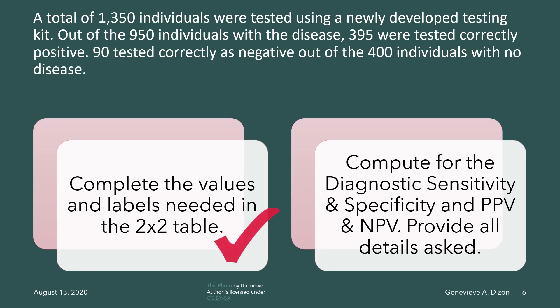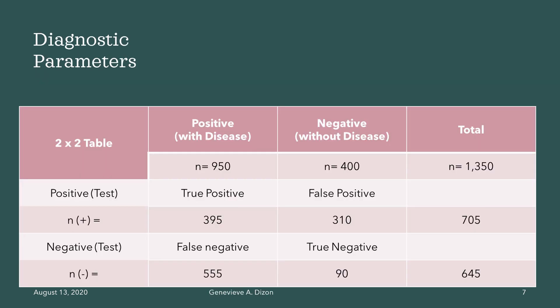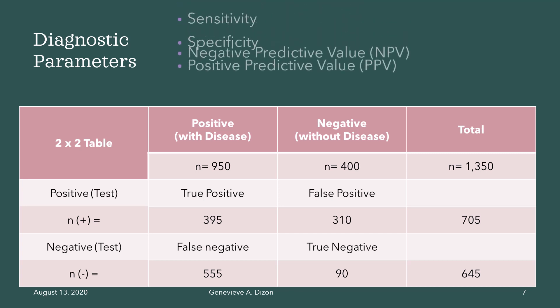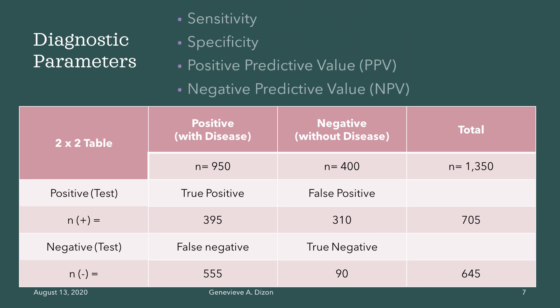We now have all the values and labels needed in the 2x2 table. Next is to compute for the different diagnostic test parameters: sensitivity, specificity, positive predictive value or PPV, and negative predictive value. To make formulas easier to remember, true positives are labeled as A, false positives as B, false negatives as C, and true negatives as D.